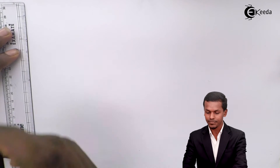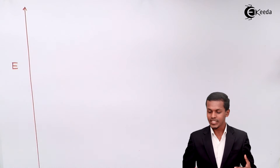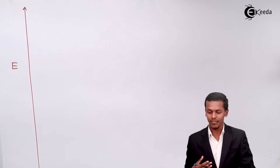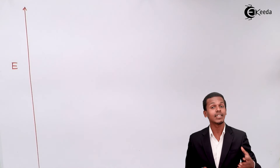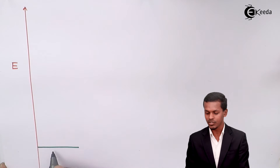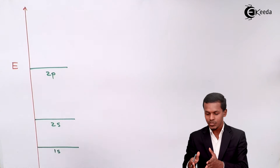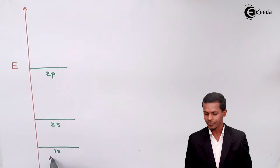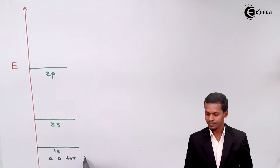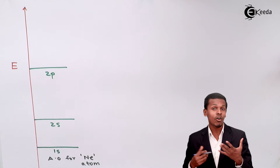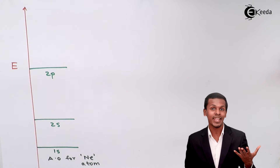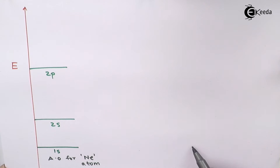For that, the first thing we have to do is represent the energy level. We have 1s, 2s, and 2p orbitals at different energies, and I am representing these for the first neon atom. For the second neon atom, we also represent another set of atomic orbitals. The energy levels are the same for both because the two atoms are identical.